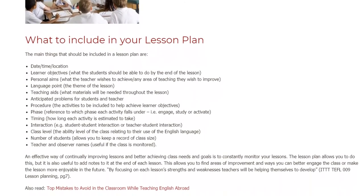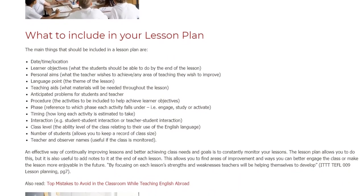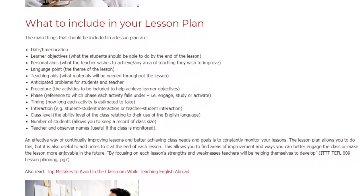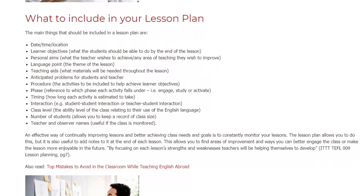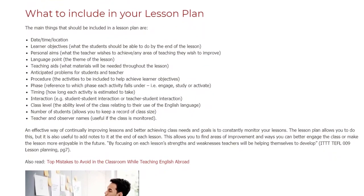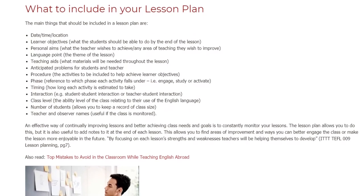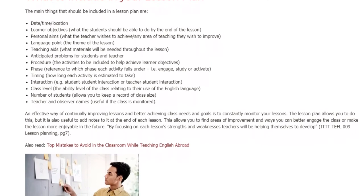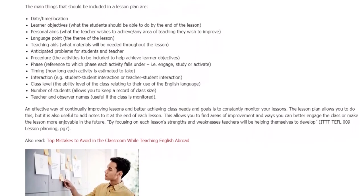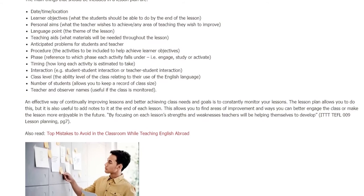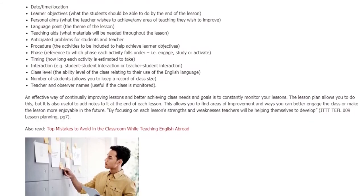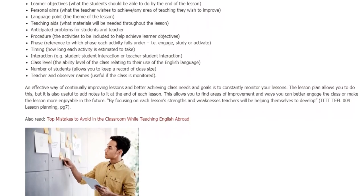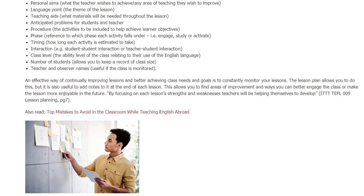Also include: phase — reference to which phase each activity falls under, i.e. engage, study, or activate; timing — how long each activity is estimated to take; interaction — for example student-student interaction or teacher-student interaction; class level — the ability level of the class relating to their use of the English language; number of students — allows you to keep a record of class size; and teacher and observer names, which is useful if the class is monitored.